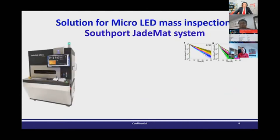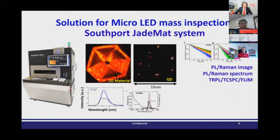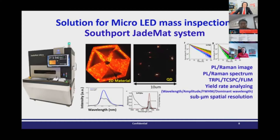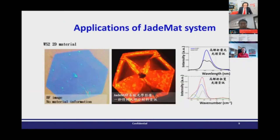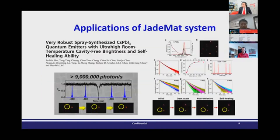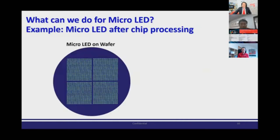I want to introduce the SouthPort JMAS system. We integrate PL and Raman imaging, PL and Raman spectrum, and also TRPL spectrum, along with error rate analyzing algorithms, all with micron spatial resolution and sub-nanometer wavelength resolution in one system. This system has been widely used in 2D material inspection, perovskite inspection, quantum dot and quantum technology, and single photon emission inspection.